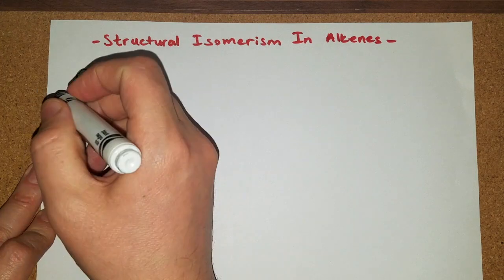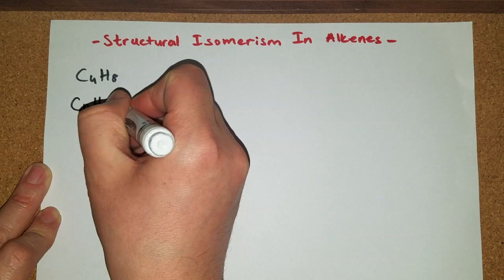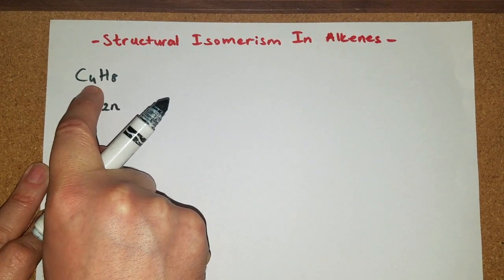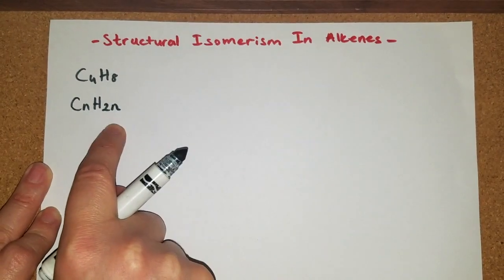As you remember, the general formula of alkenes was CnH2n. And since the number of hydrogens is two times bigger than the number of carbon atoms in here, this compound most probably is an alkene.